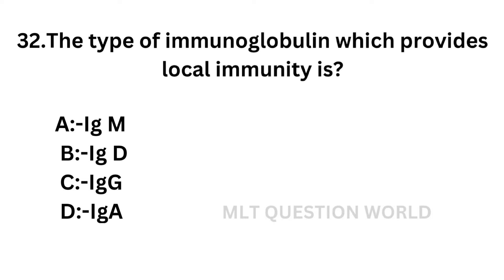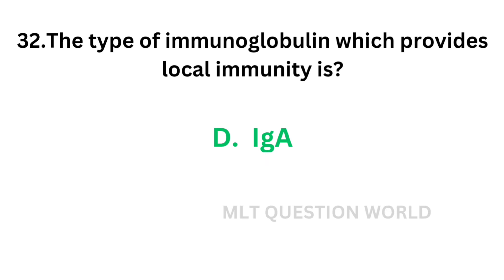Question number 32: The type of immunoglobulin which provides local immunity is — option A: IgM, option B: IgD, option C: IgG, option D: IgA. The correct answer is option D, IgA. IgA provides local immunity.